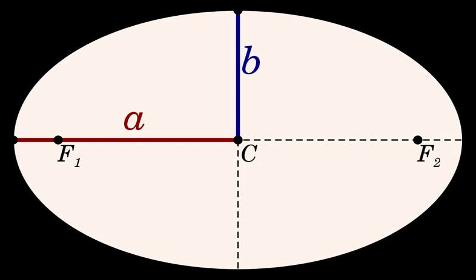In geometry, the major axis of an ellipse is its longest diameter, a line segment that runs through the center and both foci, with ends at the widest points of the perimeter. The semi-major axis is one-half of the major axis, and thus runs from the center, through a focus, and to the perimeter.